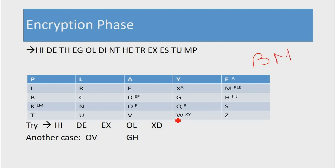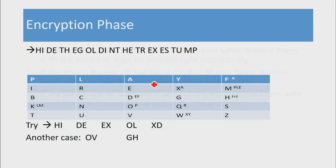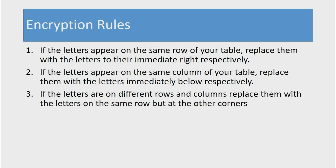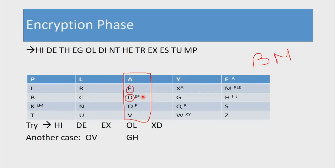Next, we'll encrypt DE. D is here and E is here. Since these two are on the same column, the second rule applies, which states that if they're on the same column you replace them with the letters immediately below. D will be encrypted to O, which is directly below, and E will be encrypted to D, which is directly below E.